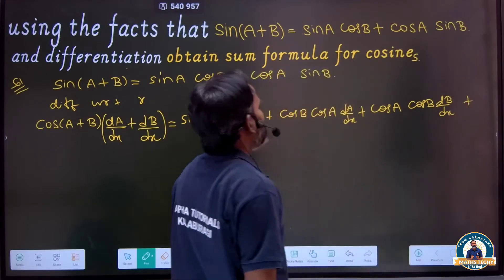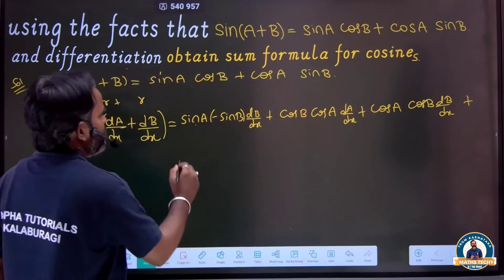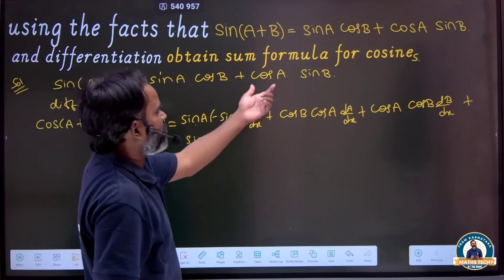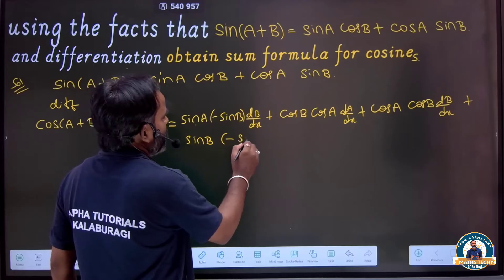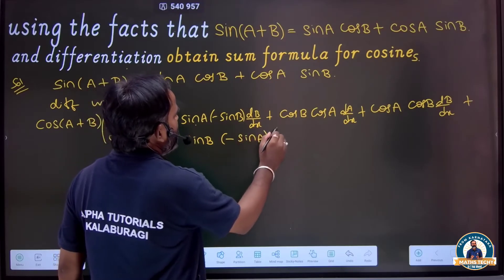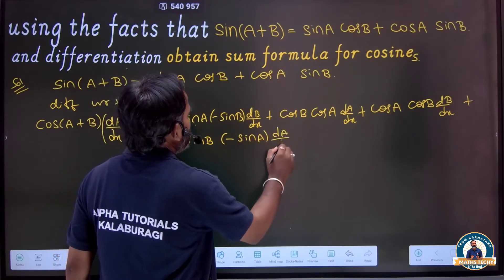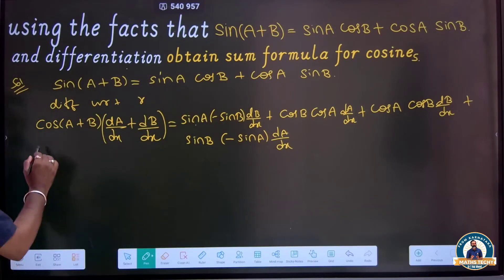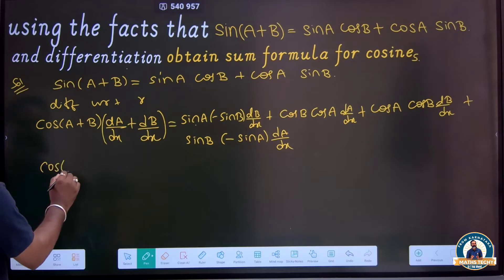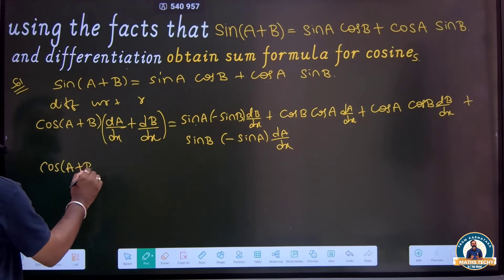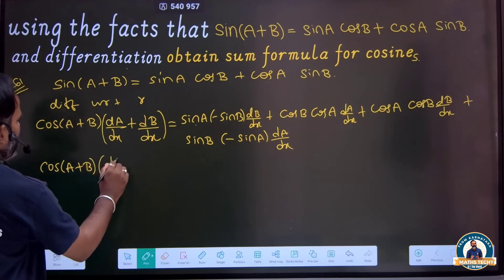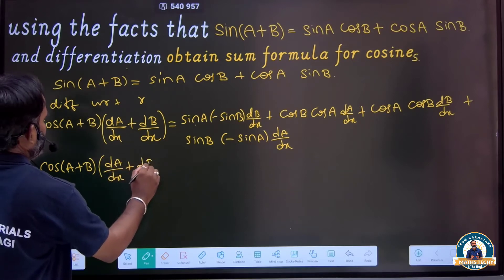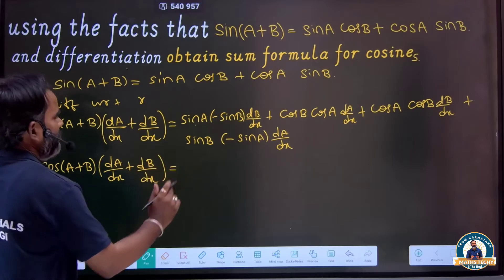Plus the second function as it is, and differentiation of the first function cos a gives minus sin a times da/dx. So the answer, combining these terms, is cos(a+b) times (da/dx plus db/dx), and this equals the expanded product rule result.